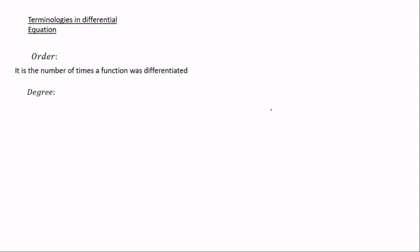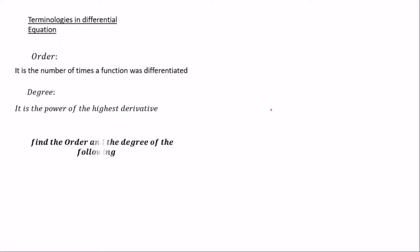Let's move on to some key terms in differential equations. The first term is order. The order is the number of times a function was differentiated — so if a function is differentiated three times, the order is three. The second term is degree: the degree is the power of the highest-order derivative. Let's take some examples to find order and degree.